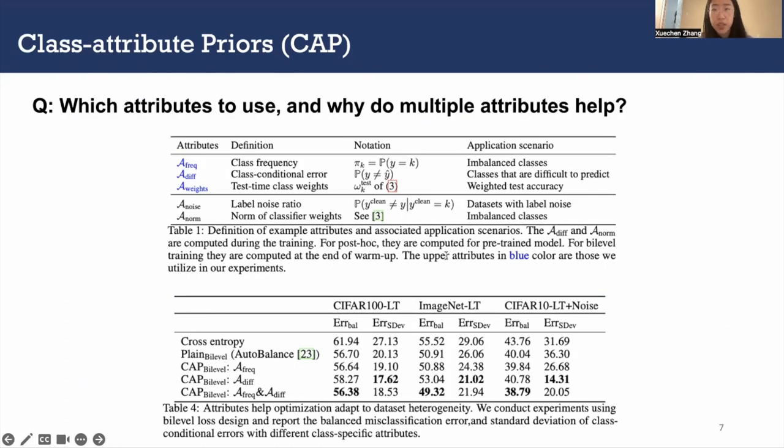We list the potential attributes in the table. Any class specific method feature could all be used as an attribute with CAP. The table shows the results of bi-level optimization. The table shows that CAP truly outperforms other methods.